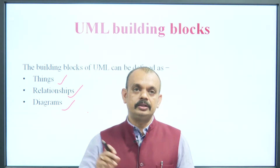Next building block is the Relationship. Relationship is another most important building block of UML. It shows how the elements are associated with each other — dependency, connection, kaise elements aapas mein connected hain. There are four kinds of relationships: dependency, association, generalization, and realization.